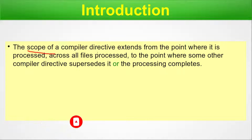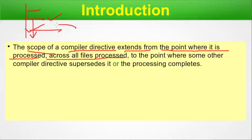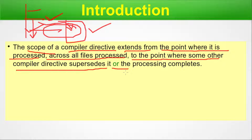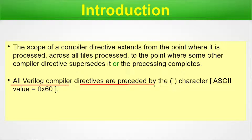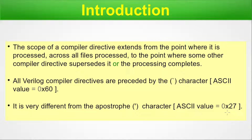Introduction. The scope of a compiler directive extends from the point where it is processed. That means at some point in your code where you have defined the compiler directive, from then on the effect of that directive is processed across all files. If several files are included via a backtick include directive and they are inflated during compilation and simulation, the directive defined before them will also be applicable. This holds until some other compiler directive supersedes it or processing completes. All Verilog compiler directives are processed by the backtick character, which has an ASCII value of 60, and this backtick is very different from the apostrophe character, which has an ASCII value of 27.